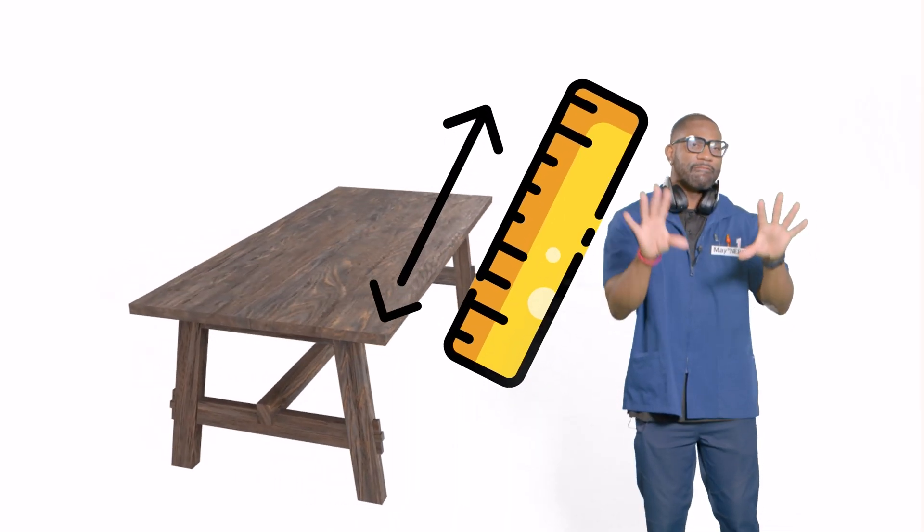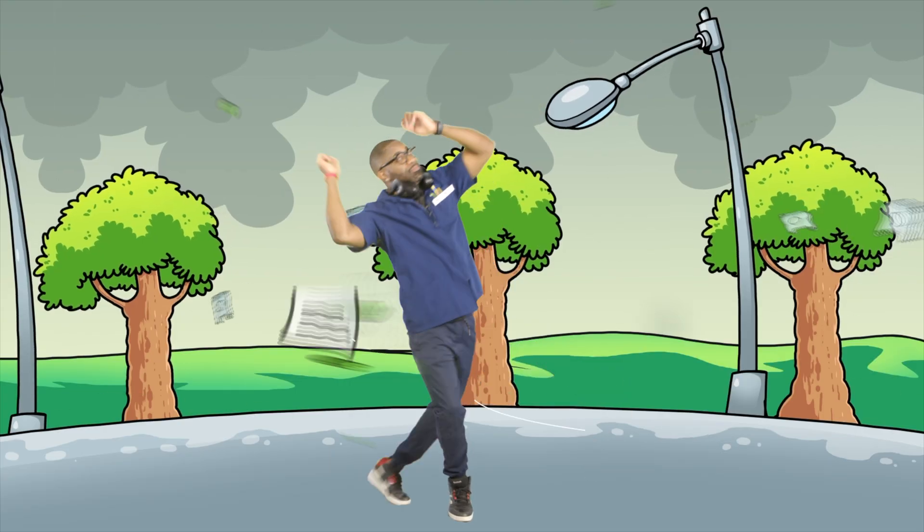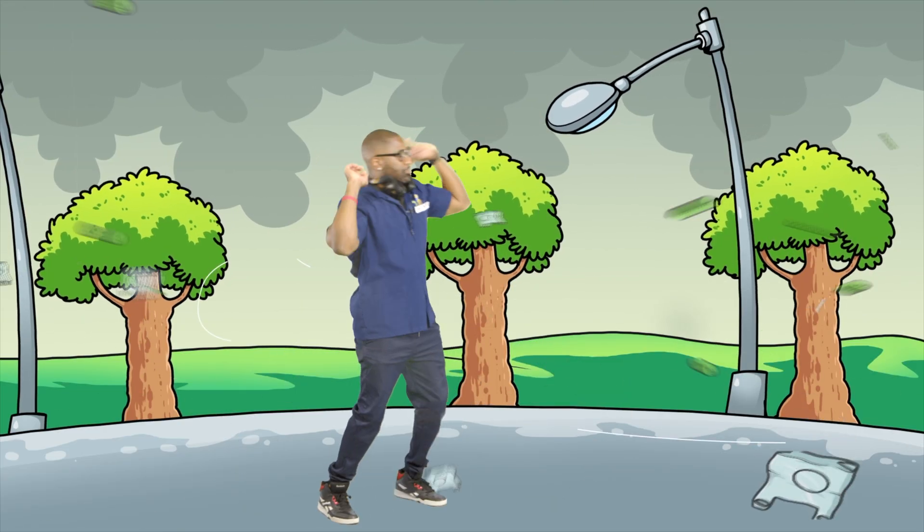When something vibrates, like a ruler snapping on a table, it makes the air around it move. These movements are called sound waves.